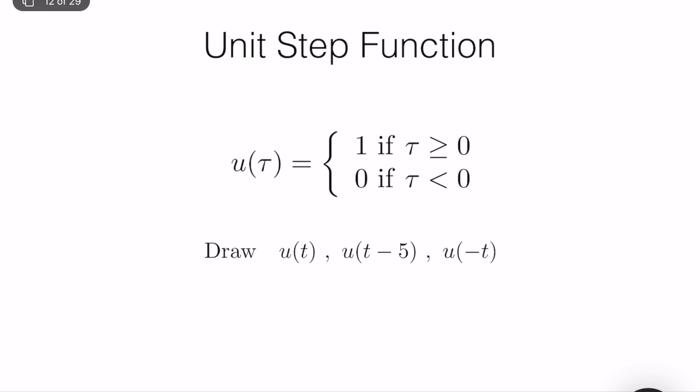What is a step function? A unit step function u(t) is equal to 1 when the argument inside the parentheses is greater than 0, and it's equal to 0 if it is less than 0. It can be u(t), u(t−1), or u(−t). Let's draw these different functions and try to understand their behavior in electrical circuits.